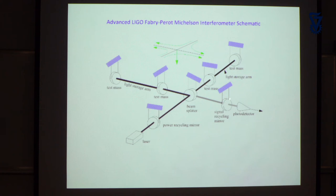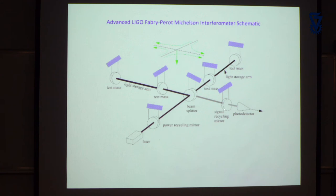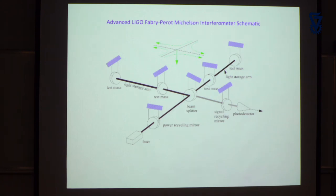The remaining mirror — called the signal recycling mirror — is more subtle. The sidebands coming out of the interferometer induced by the gravitational wave can be fed back into the system to be amplified further. But you pay a price: the bandwidth of the interferometer narrows. So you can tailor the spectral response of the interferometer by positioning this mirror — invented primarily by Brian Meers together with Ron Drever.